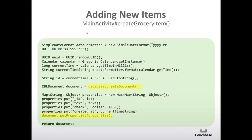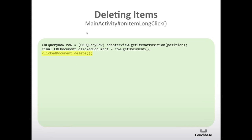To add a new item, we call database.createDocument(), which creates a blank document. Then we create a HashMap with all the fields: we set the ID to a random UUID, set the text to whatever the user typed in, default the check to false, and set 'created_at' as the current time. Then we call document.putProperties(), which is the same API call as when we updated a document, and that will save and persist it. To delete an item, it's very straightforward — we get the row at the position in the adapter view they long-clicked, get the document from that row, and call delete() on the document.